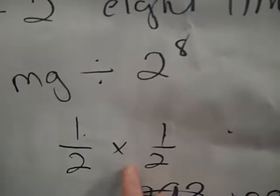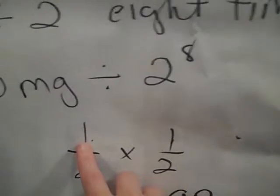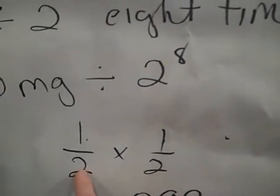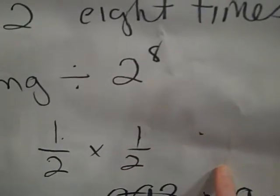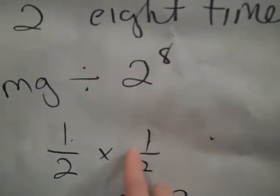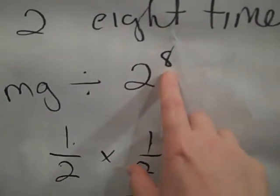I would say one times one times one eight times, and I would have two times two times two eight times. Two times itself, eight times, is the same as two to the eighth power.